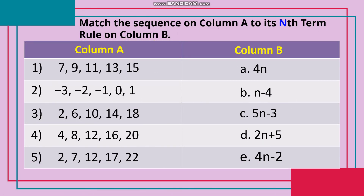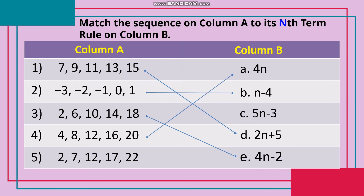Match the sequence on Column A to its nth term rule on Column B. Number 1: 7, 9, 11, 13, 15 — answer: Letter D, 2N+5. Number 2: −3, −2, −1, 0, 1 — answer: Letter B, N−4. Number 3: 2, 6, 10, 14, 18 — answer: Letter E, 4N−2. Number 4: 4, 8, 12, 16, 20 — answer: Letter A, 4N. Number 5: 2, 7, 12, 17, 22 — answer: Letter C, 5N−3.